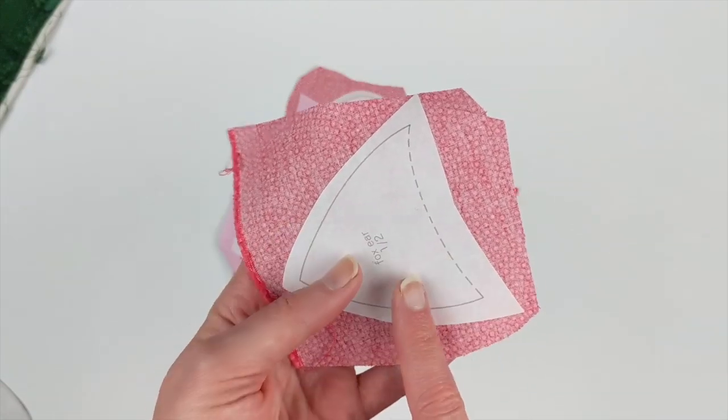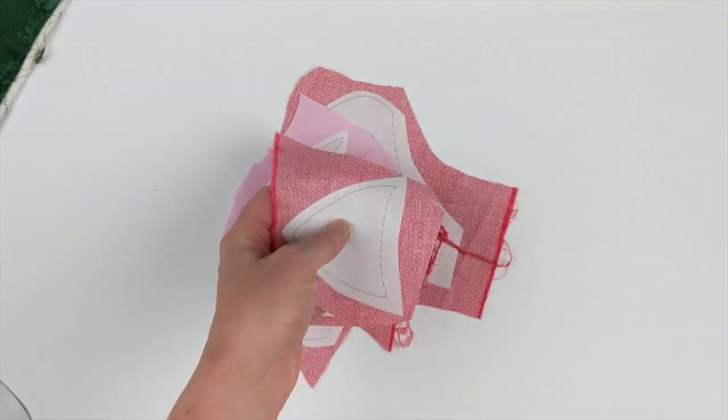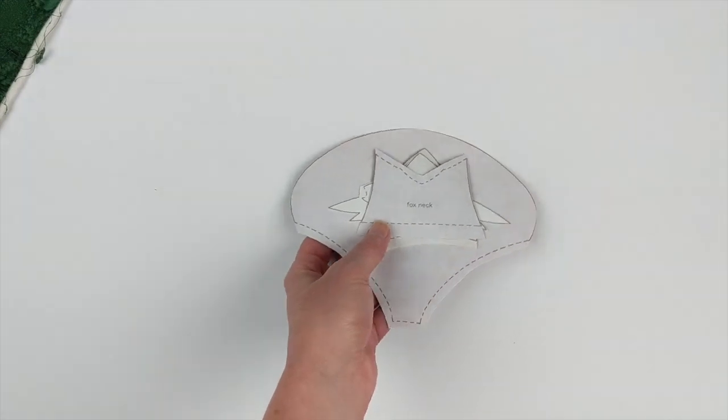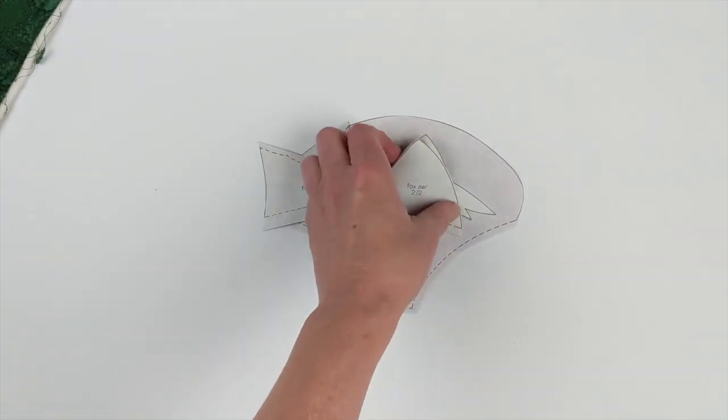And then fuse it following the package directions to the back of the fabric that you're using. After you get all the pieces fused down, that's when you do a clean cut. And by a clean cut, I mean you're going to cut right on all of the solid lines.